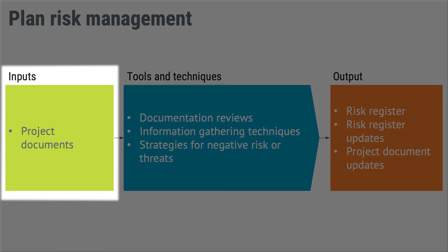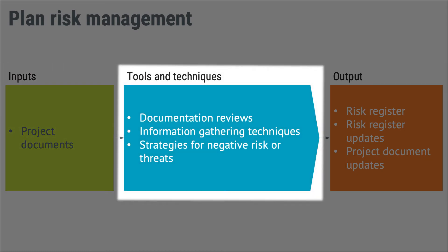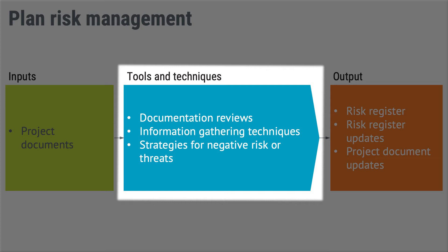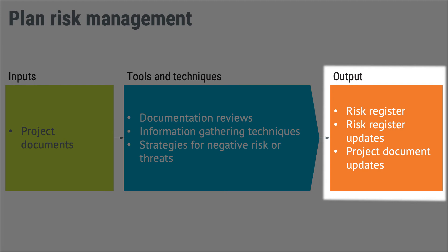When working with the process of identifying risks, you might start with your project documents or the inherent knowledge you have of the project. You could use information gathering techniques to identify the risks, and when it comes to responses, you would apply strategies for negative risks or threats. To be honest, these tools are a bit academic — most of the time you'd be doing this through brainstorming sessions or someone sitting down and going through the list. The output will be the risk register or risk list, updated each time you apply the process. When you implement risk responses, those should be documented in your project documents, giving you project document updates.